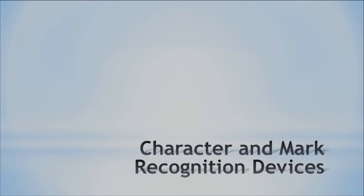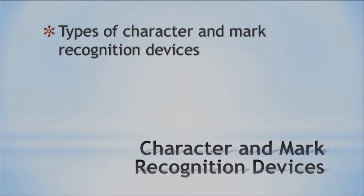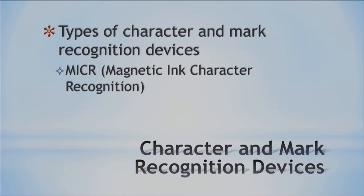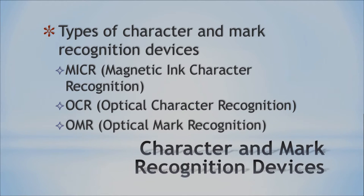Next are character and mark recognition devices. You might think a scanner is just visual, but it's also used to identify marks or special characters. There are different types: MICR — Magnetic Ink Character Recognition; OCR — Optical Character Recognition; and OMR — Optical Mark Recognition. Lots of acronyms — three-letter acronyms, or TLAs. Let's see more about each of these.